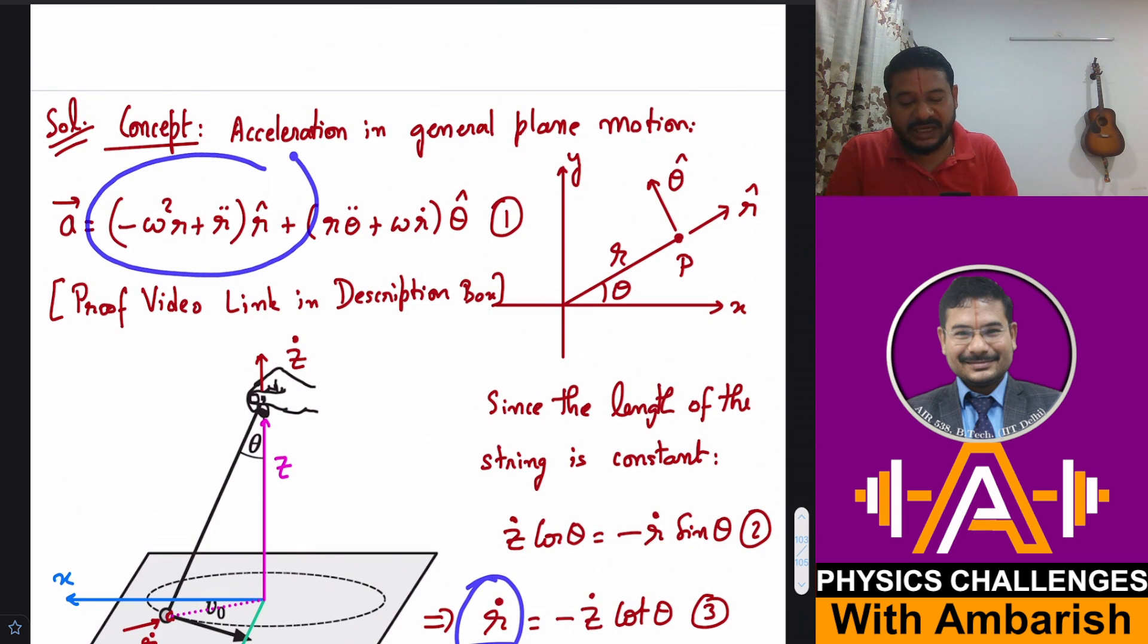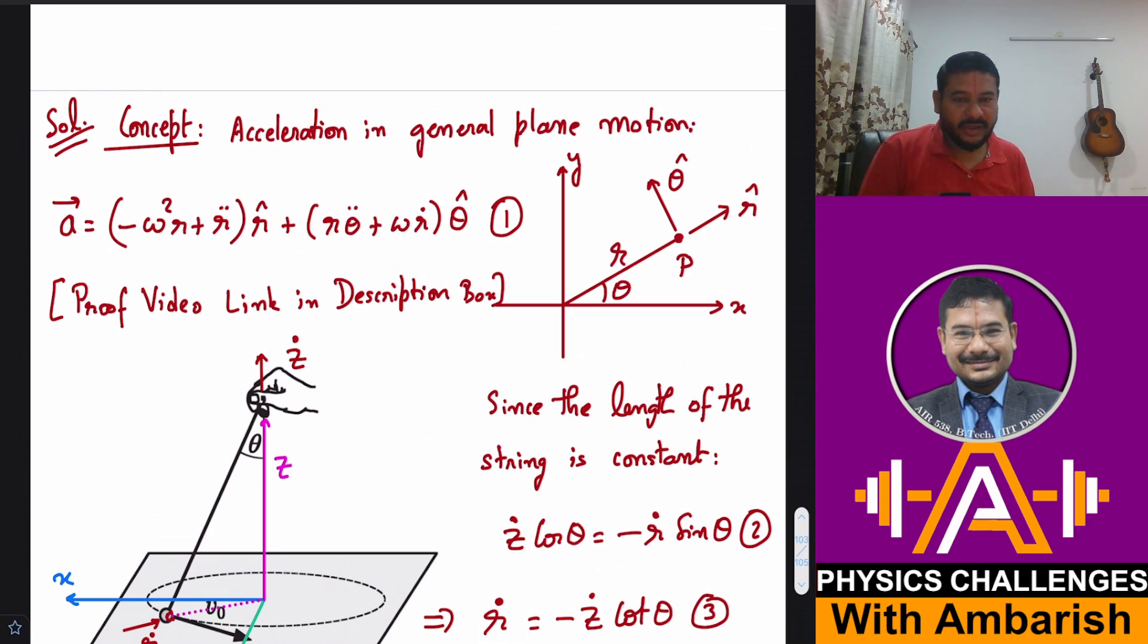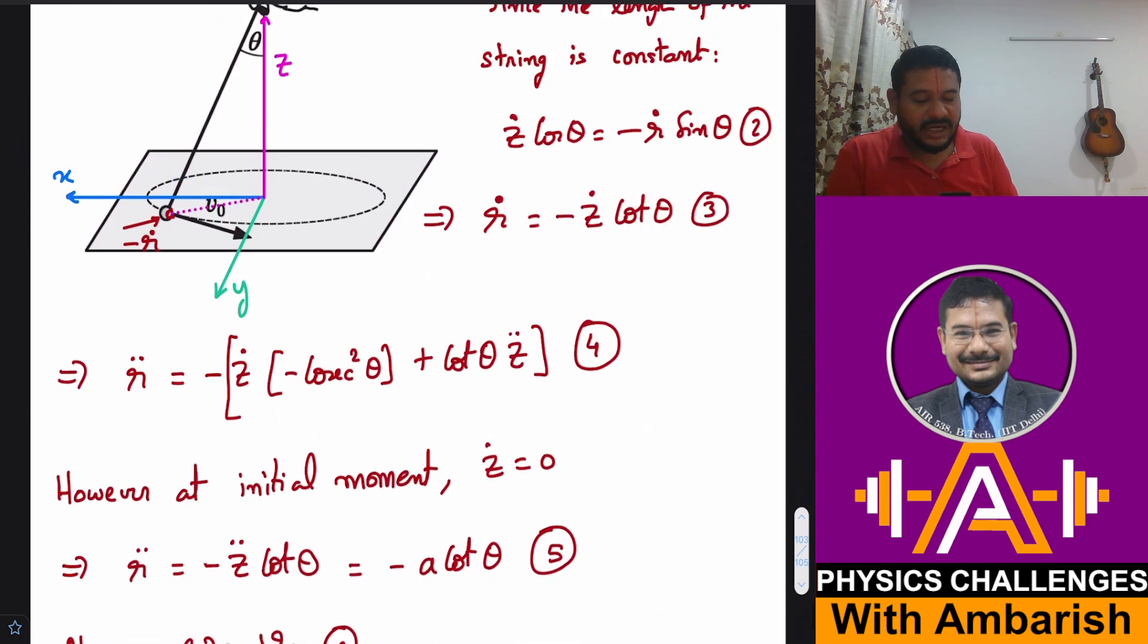Now I am going to calculate r̈, because for calculating the radial acceleration I need r̈ as well as ω². So r̈, just differentiate this. So that is minus, and you use the product rule, so ż and -cos²θ, there should have been a θ̇ here - first function into derivative of second, so there should have also been a θ̇ over here. And plus cos θ z̈. So my math still worked out because I know that at the initial moment ż = 0, so anyway this term was going to be 0, but in the product rule I made a slight mistake. I have corrected it just now. There should be a θ̇ because -cos²θ and dθ/dt would be there.